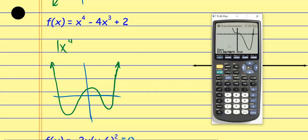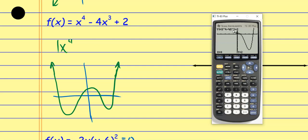Now I can move on to the y-intercept. Second, Calculate, Value. The y-intercept occurs when x equals zero, so I punch a zero in. That gives me a y-intercept of 2 — which would have been really easy to find from the equation itself by plugging zero in; we didn't really need the calculator for that. Now I want to find the relative minimum. There's only one this time because this curve doesn't give me a second relative minimum — it's not as exaggerated as the sketch I had drawn.